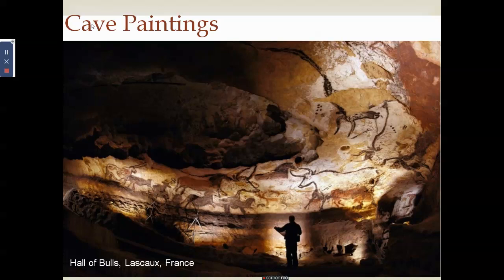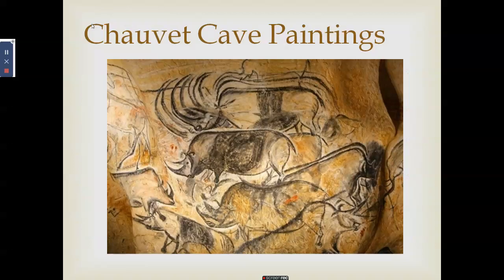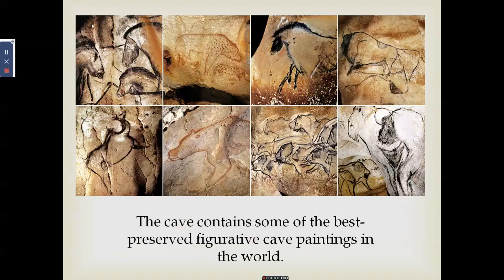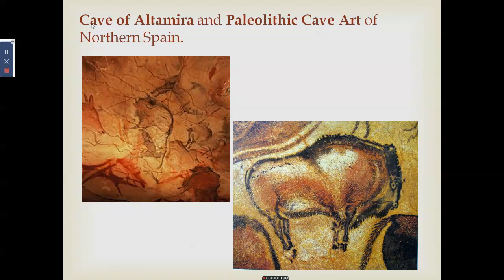In France, the Lascaux cave is notable, with an area called the Hall of Bulls because of the many depictions of aurochs — a species of cattle — and horses. The Chauvet cave also contains many animal paintings. The Bradshaw rock paintings in Western Australia, dated 17,000 years old, show human figures in fine detail with relatively accurate anatomical proportioning. In Spain, the Altamira cave features animals and hand stencils.